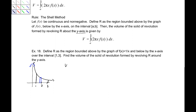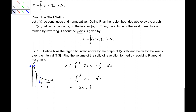This fits into the shell method, so the volume is the integral from 1 to 3 of 2 pi x times f of x, where f of x is 1 over x. The x and 1 over x cancel, giving us the integral from 1 to 3 of 2 pi dx. That is 2 pi x from 1 to 3, which is 6 pi minus 2 pi, so 4 pi units cubed. Because this is volume, we have units cubed.